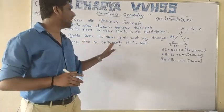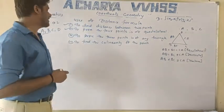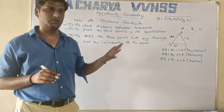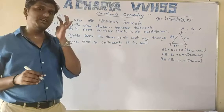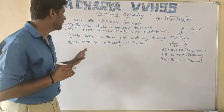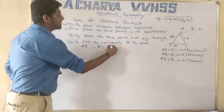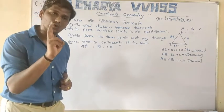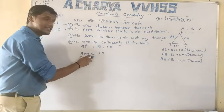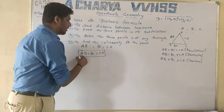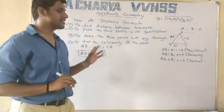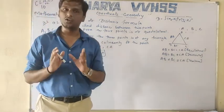The fourth use is to find the collinearity of points. If I have three points given and I need to check whether the points are collinear or not, I will find three distances from those three points. I will check if the sum of any two distances is equal to the third — if yes, they are collinear, otherwise they are not.